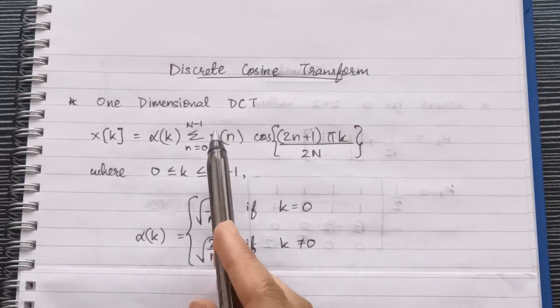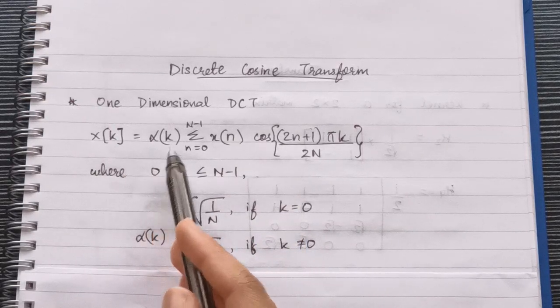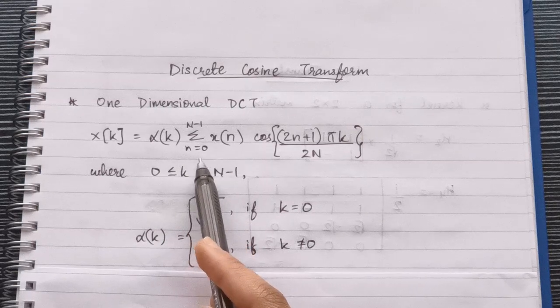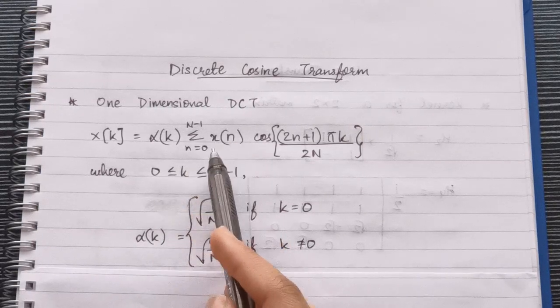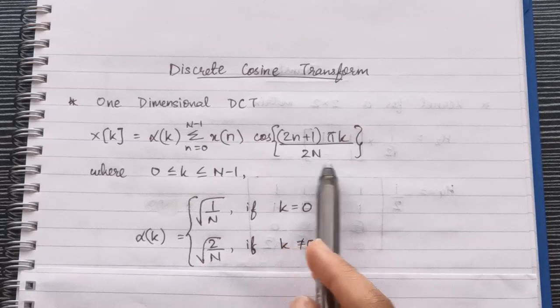Now let's look at a one-dimensional DCT function. x(k) = α(k) Σ(n=0 to N-1) x(n) cos[(2n+1)πk/(2N)], where 0 ≤ k ≤ N-1.